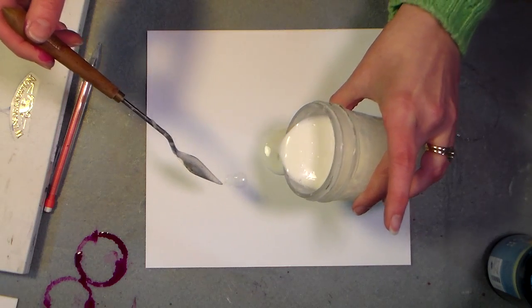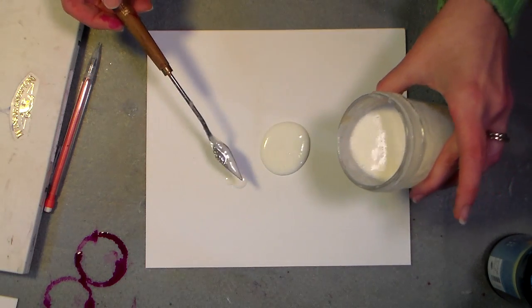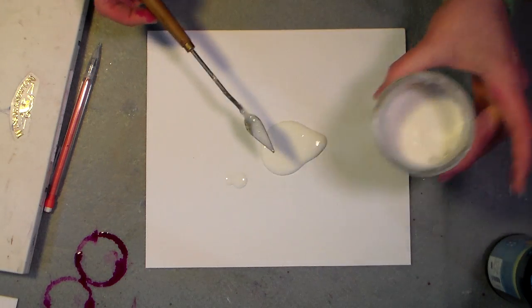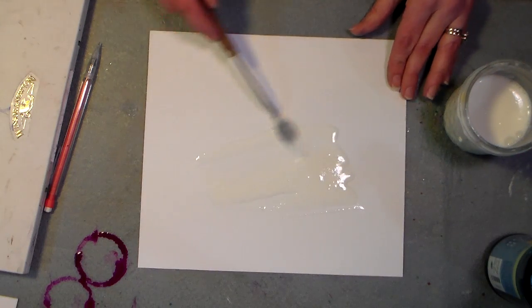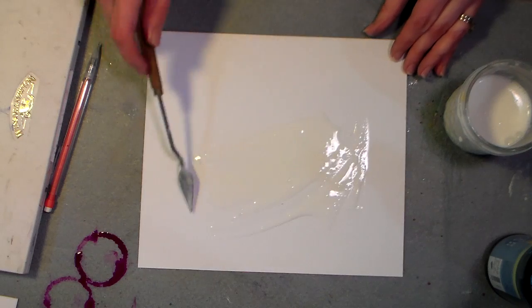The consistency is like half and half or maybe heavy cream, and then what I'm gonna do is you want to make sure you're working on a flat surface and something fairly rigid like a canvas.